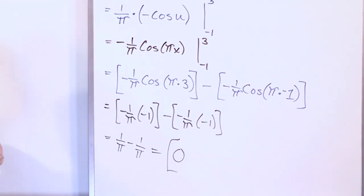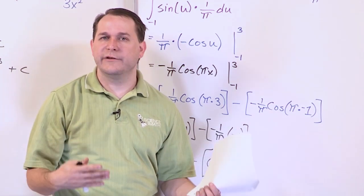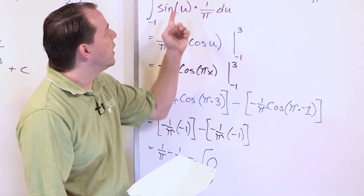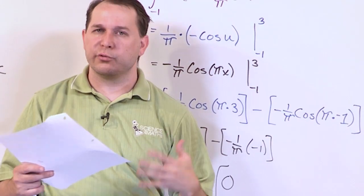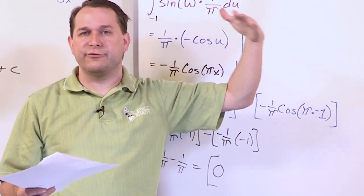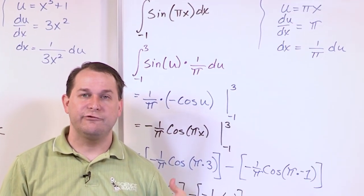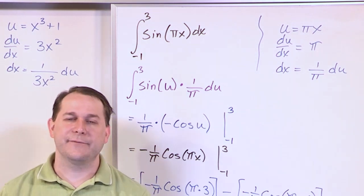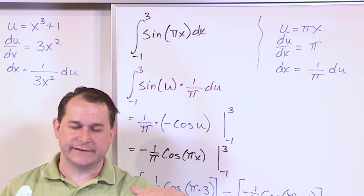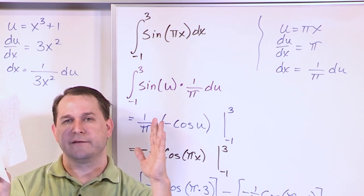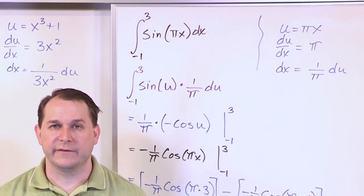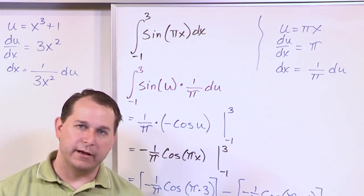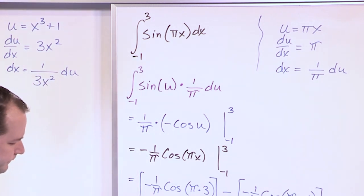Sometimes you do a lot of work and just get 0. How can the area under this curve from negative 1 to 3 be zero? Area above the x-axis is treated as positive, and area below is negative. If you graph sine of pi x, half the area between those boundaries is below the x-axis and half is above, so they cancel algebraically. That's a good exercise to verify yourself.